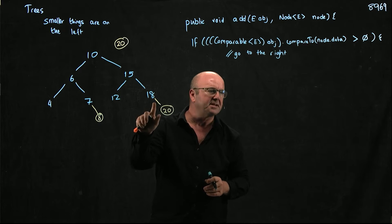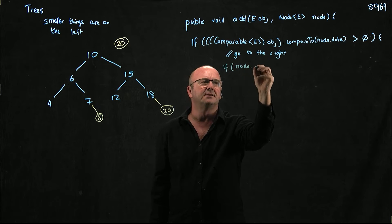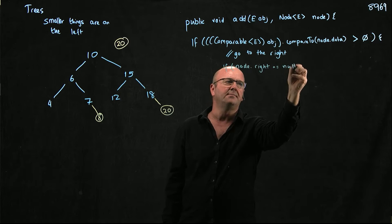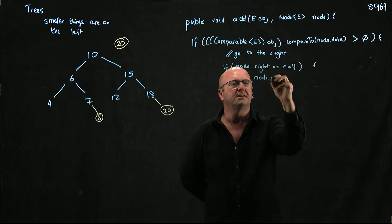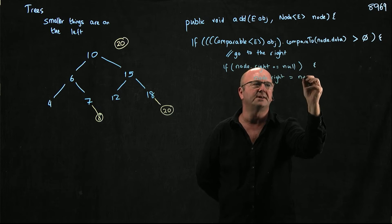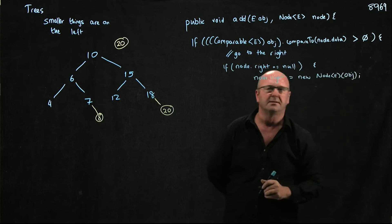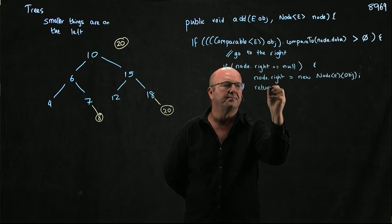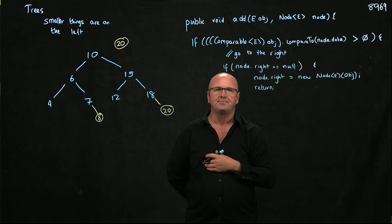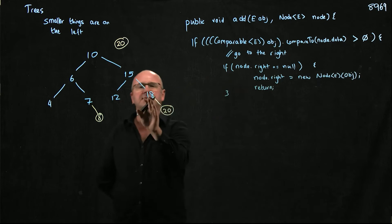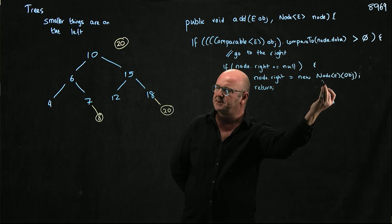We check what happens when we're at a null position. If node.right is equal to null, we make a new node and store it in node.right — so node.right equals new Node<E>(object). Once we've done that, we're done. We create the link from node.right pointing to our newly created node.